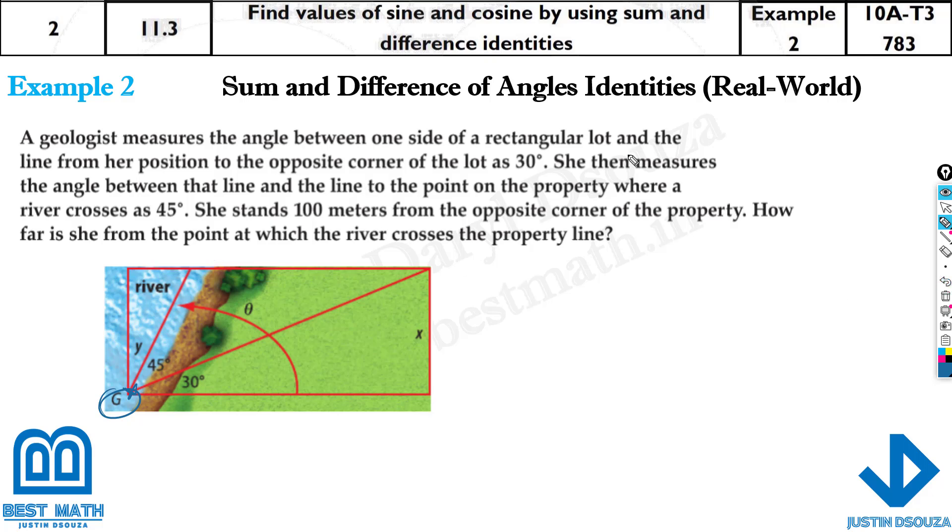And here from one corner, see from the opposite corner, this is one corner. The opposite corner is where the geologist is there. And from here to here, you can measure the angle to be 30 degrees because it's given.